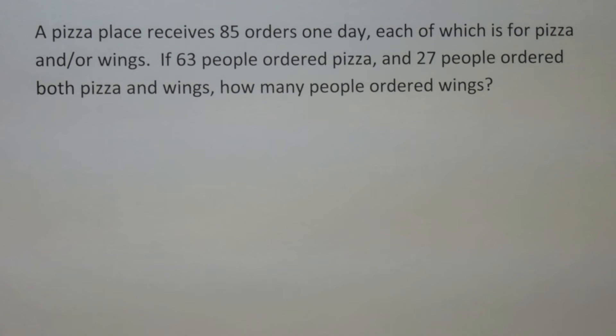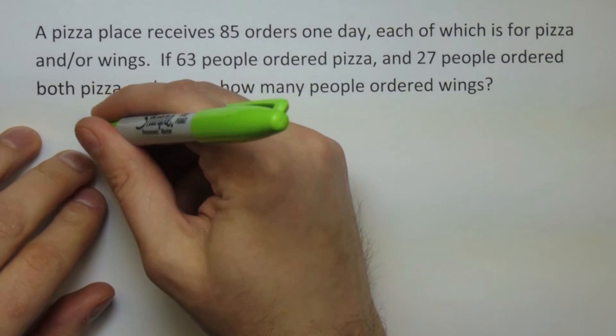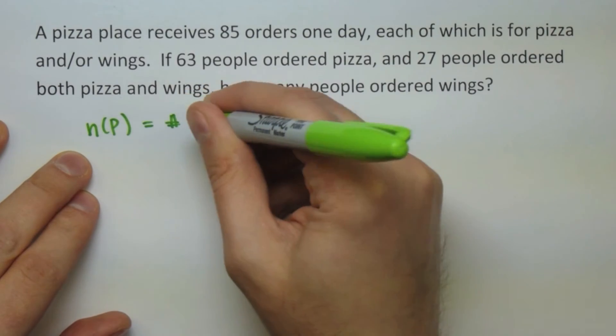As a more interesting example, let's take a look at this here. A pizza place receives orders for pizza and wings, and we have data on what people ordered what. But we are missing some data. We don't know how many people ordered the wings.